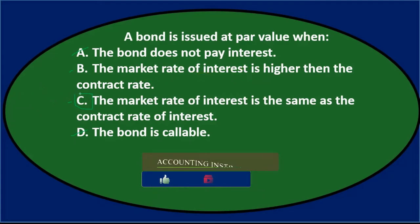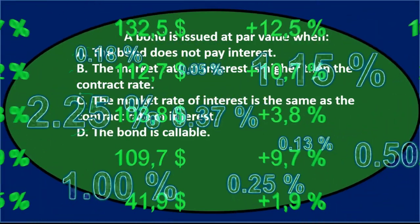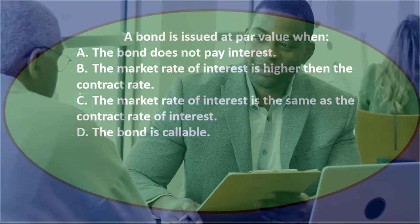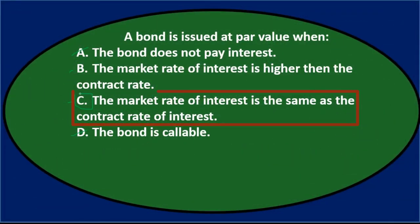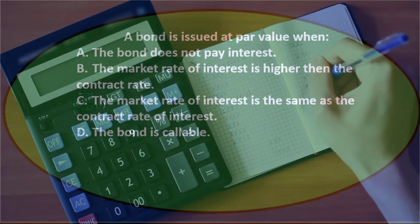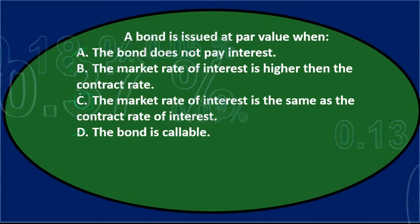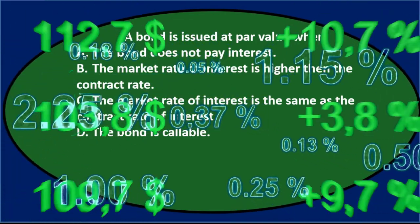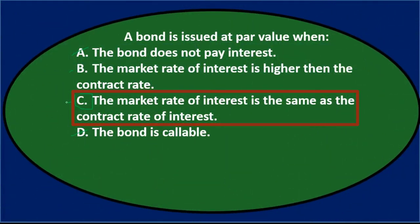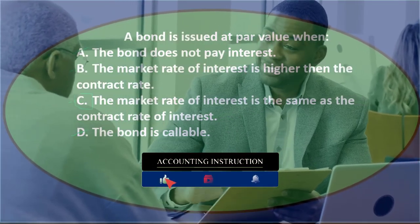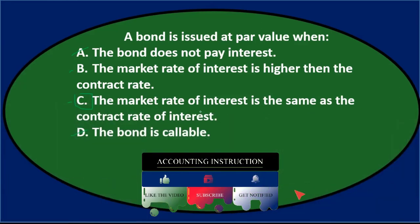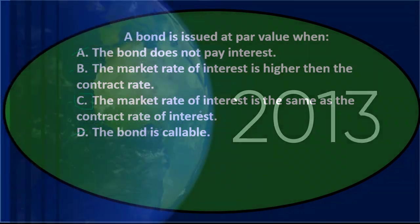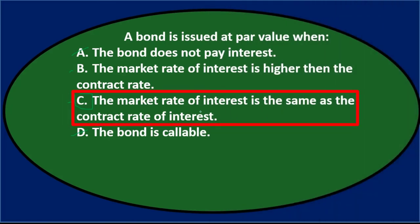Here's the reasoning: the interest rate is already printed on the bond and can't change, unlike a note where you'd haggle over the rate. With a bond, all you can negotiate is the price — the issuance amount. If the contract rate equals the market rate, it's just like getting a loan at market rate, and the bond would be issued at face value. Any difference between those two rates causes the bond to be issued at a premium or discount.